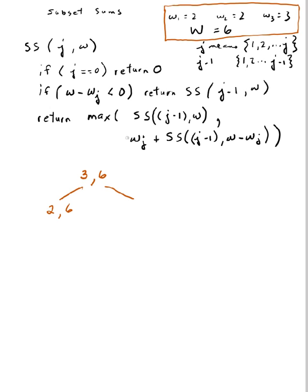And I'm going to find the max between this recursive call. So that is J minus 1 and 6. That is, I don't use my item 3. Or the weight of item 3, which is 3 plus my recursive call, which is J minus 1. So that's 2. And then I use that weight. So that would be 6 minus 3 gives me 3. Okay, that's my two possibilities.